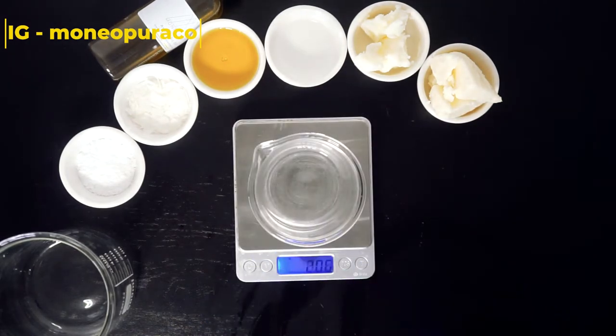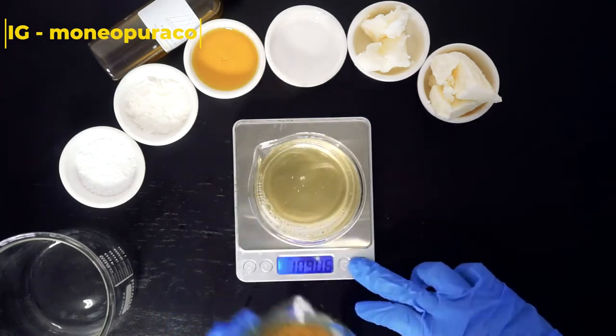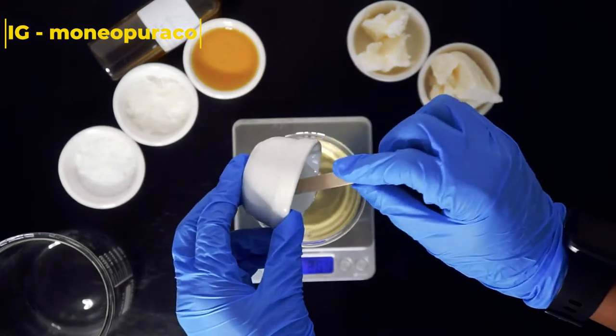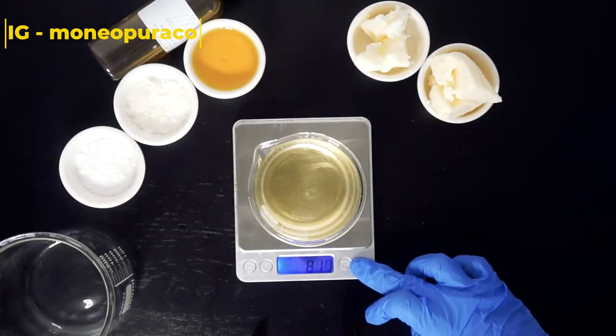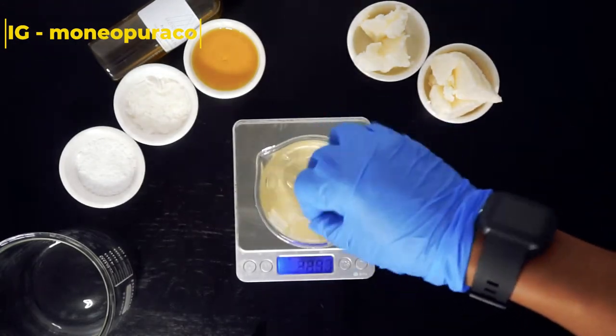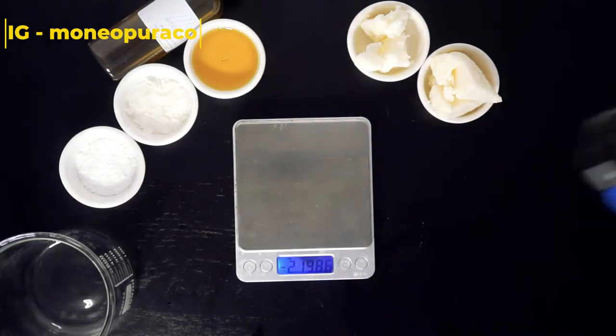We are making 120 grams of our fenugreek leave-in conditioner. Add 48 grams of your fenugreek liquid and then add 3.6 grams of glycerin. Mix those two ingredients together and that is your water phase done.